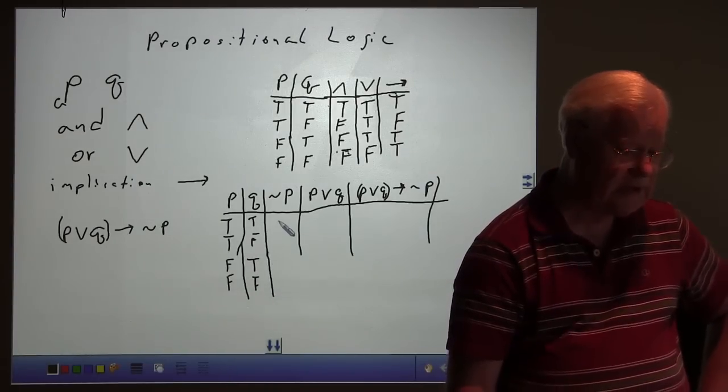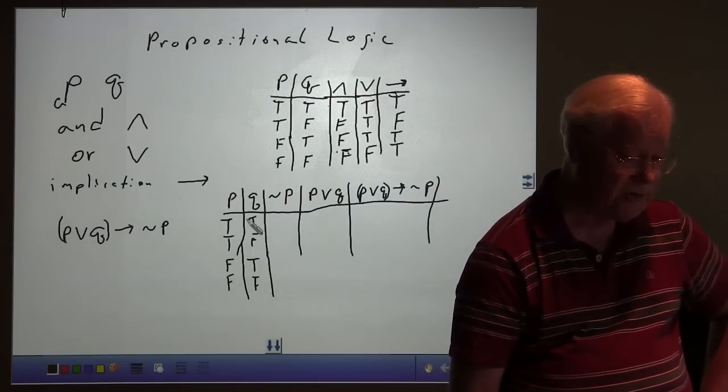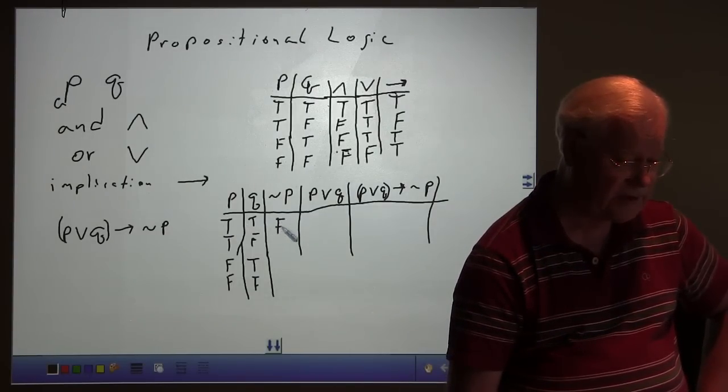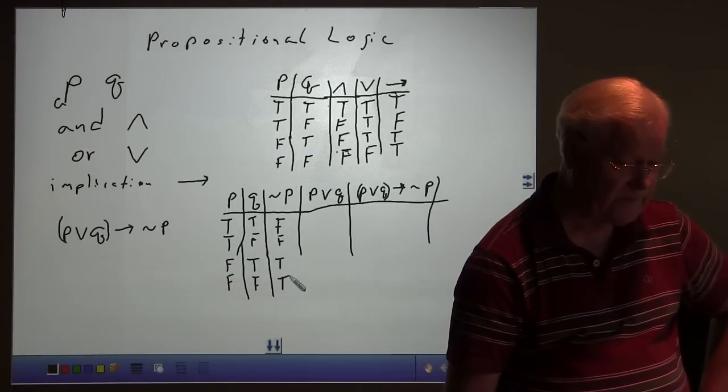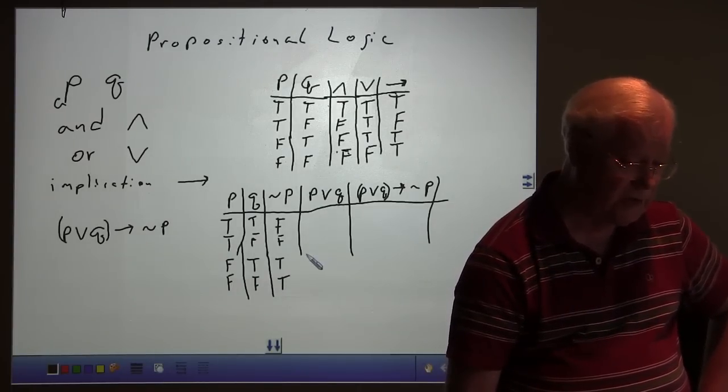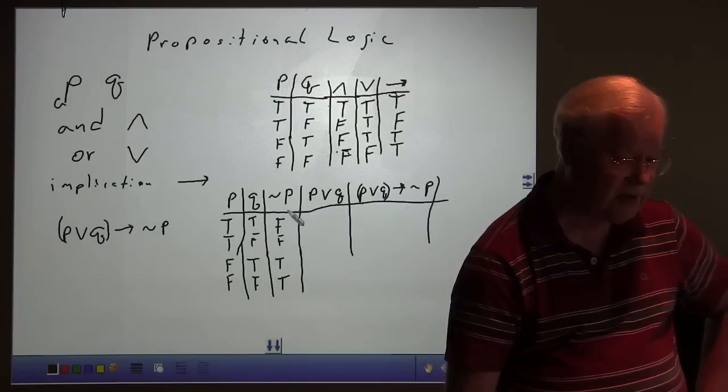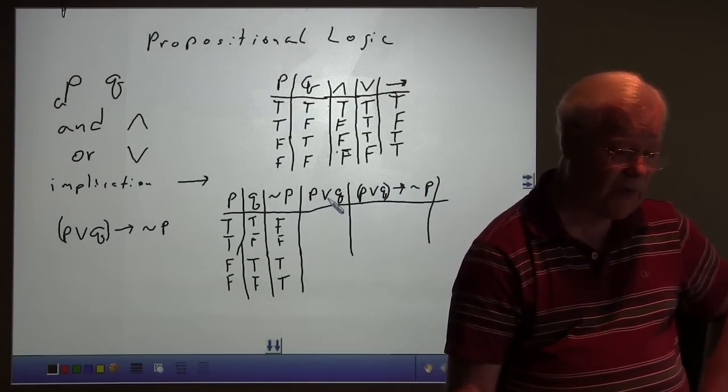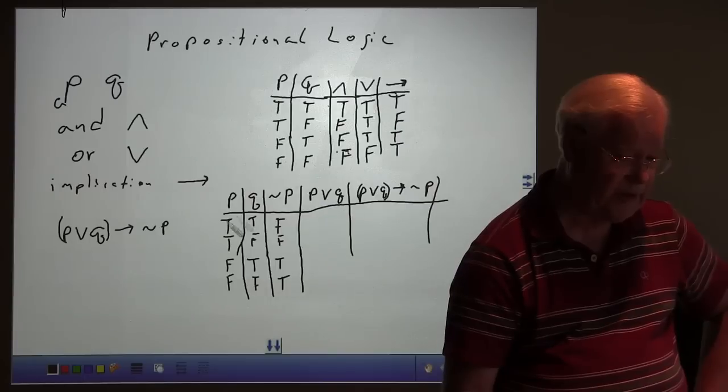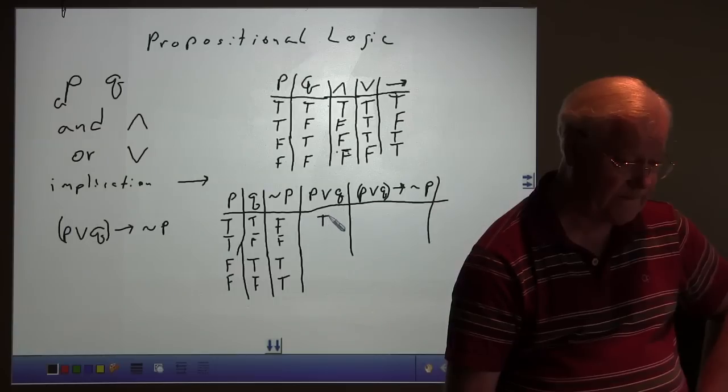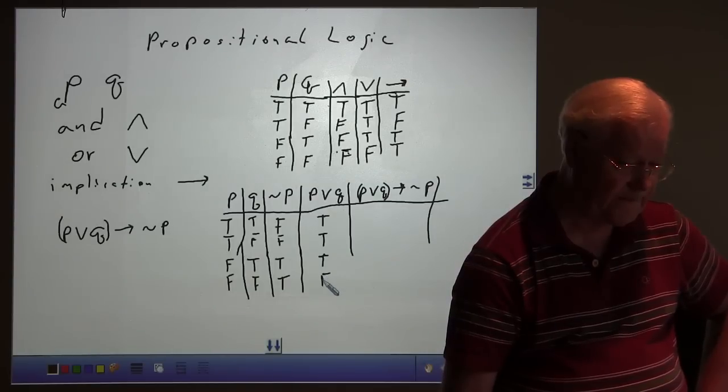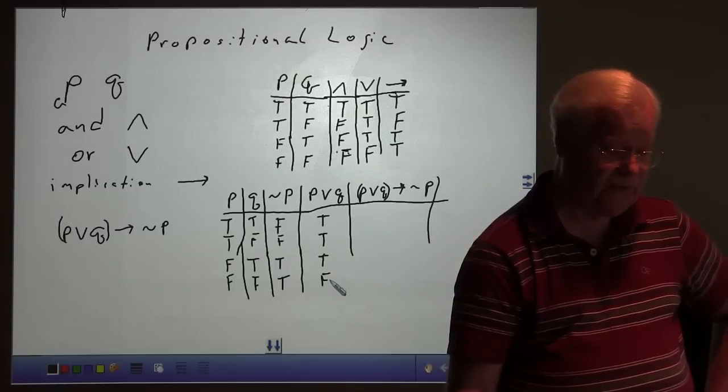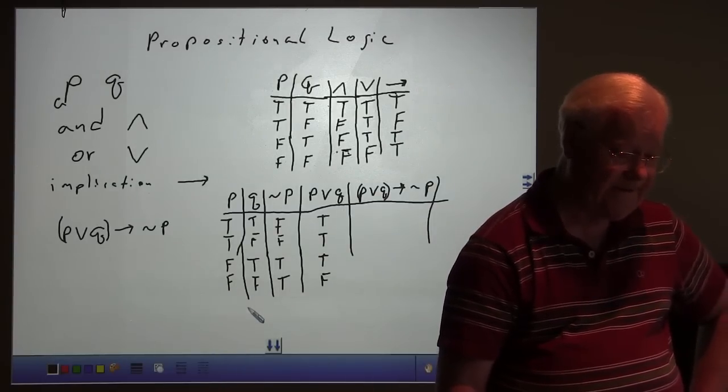Not P is going to be the opposite of P. So where P is true, not P is false. So it's going to go false, false, true, true. P or Q? That's going to be true everywhere except when both are false. So it's going to go true, true, true, and false. It's true every time except when both are false. These are the two we're looking at, P and Q.